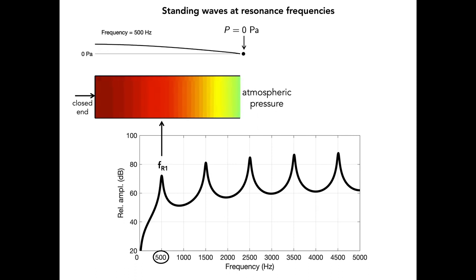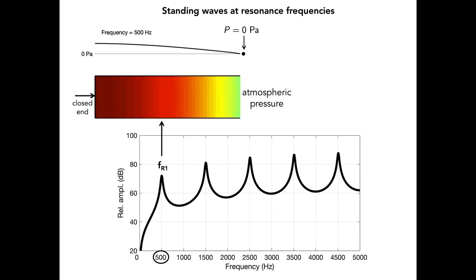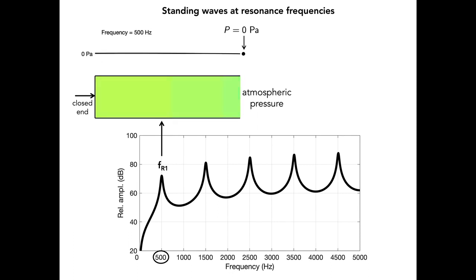These are known as boundary conditions that determine the pattern of pressure variation that can be reinforced by the specific configuration of the tube. When the input frequency is aligned with the first resonance of a closed-open tube, the standing wave produced is one quarter of the wavelength. For this reason, closed-open tubes are sometimes referred to as a quarter-wave resonator or a quarter-wave tube.